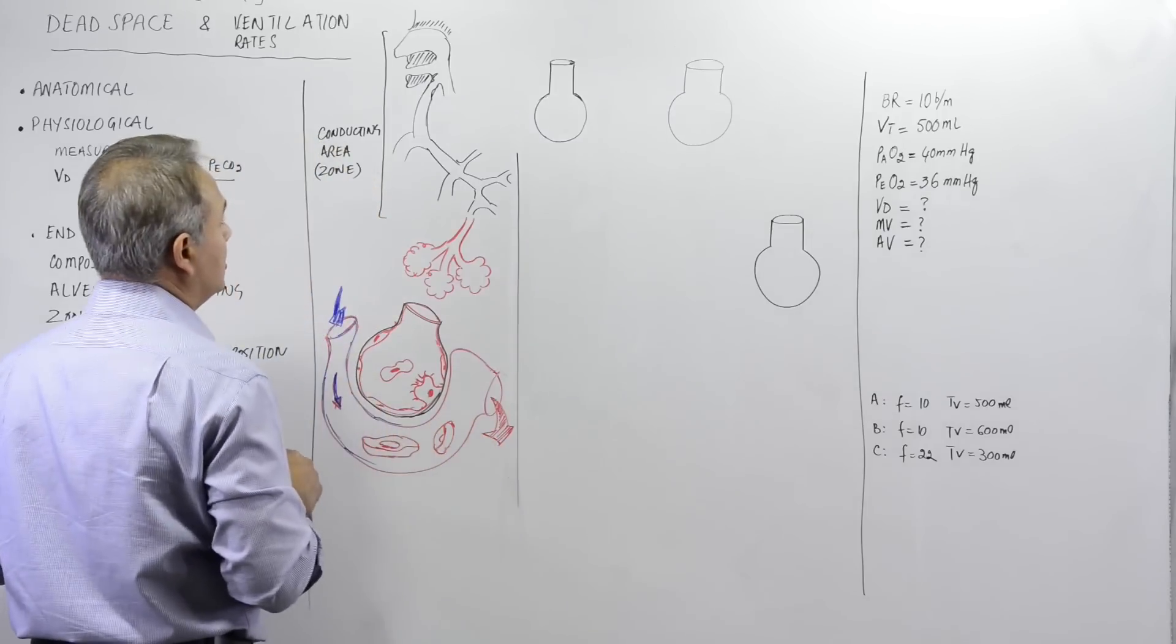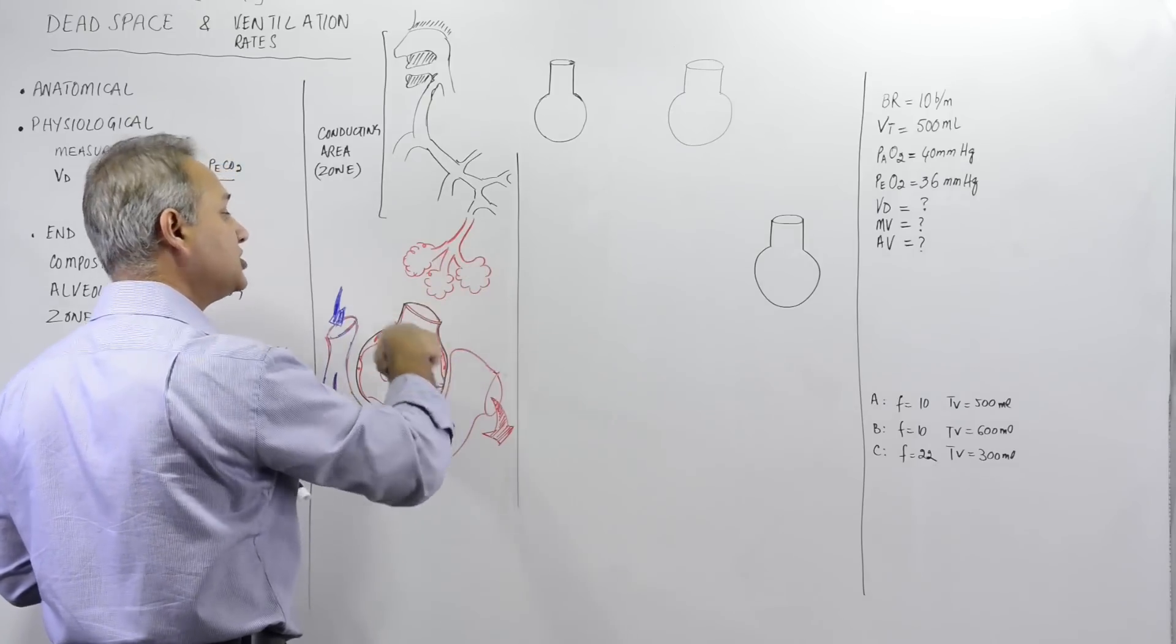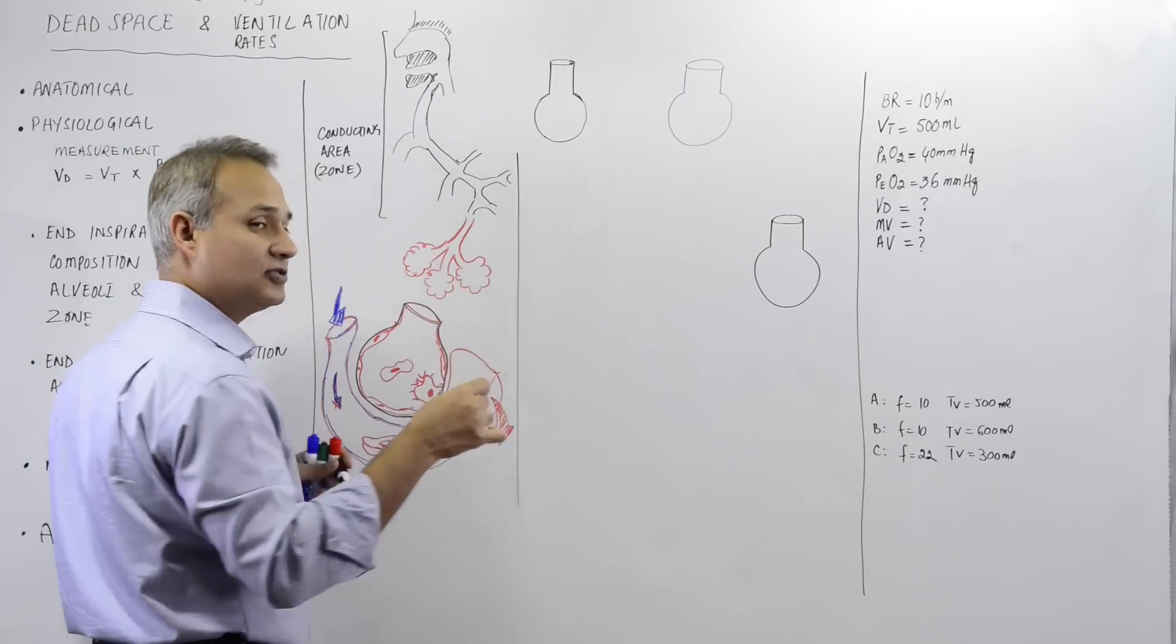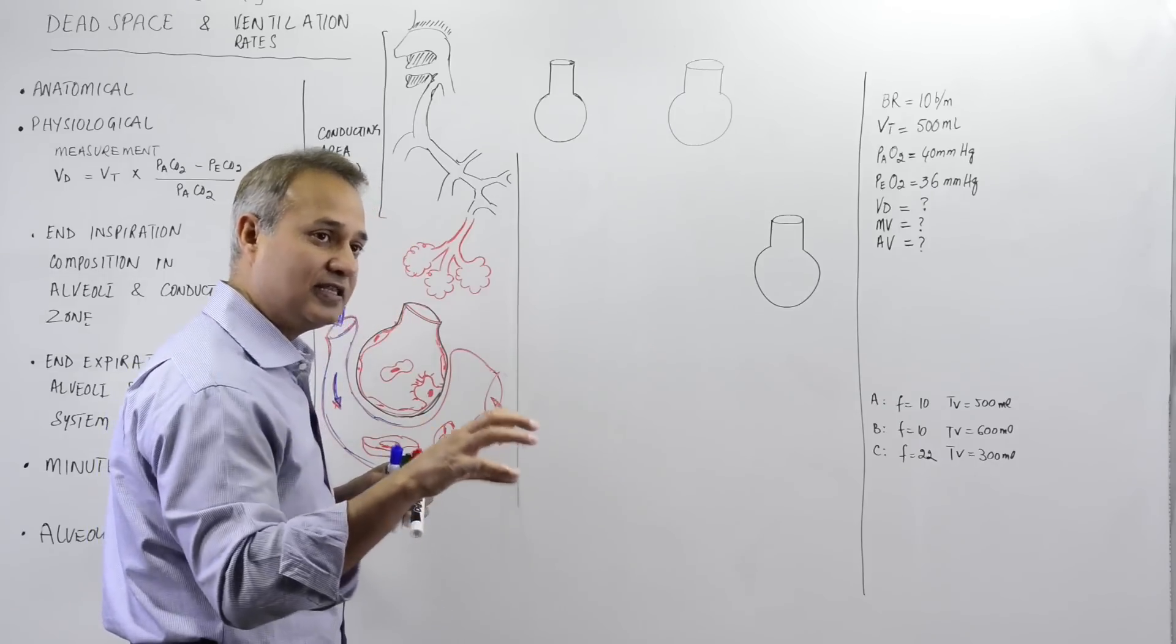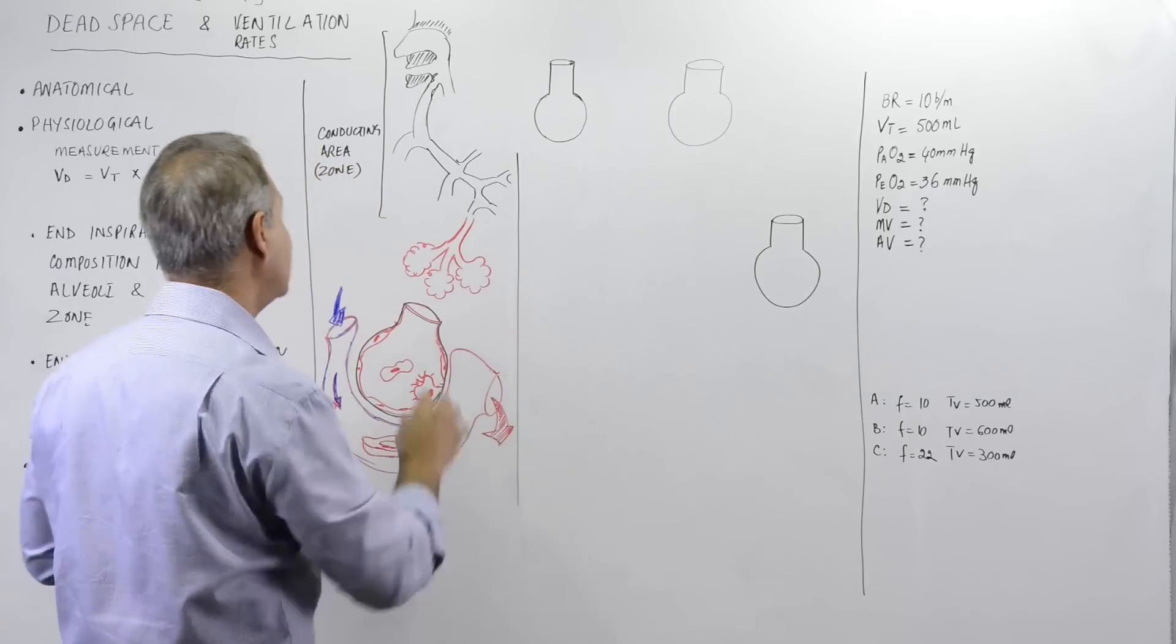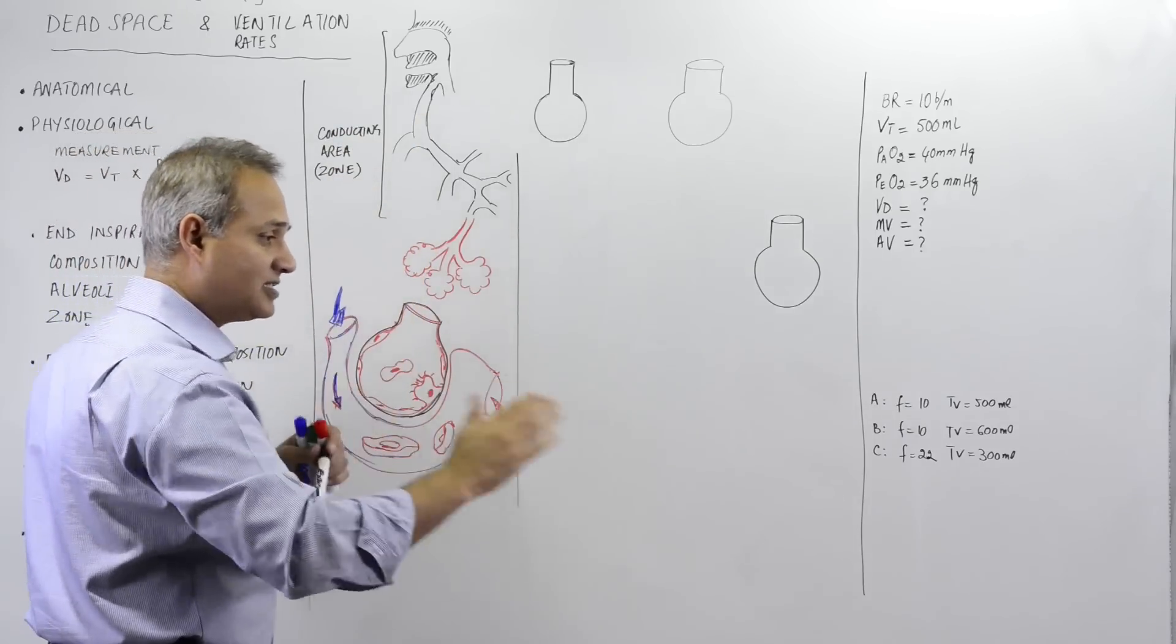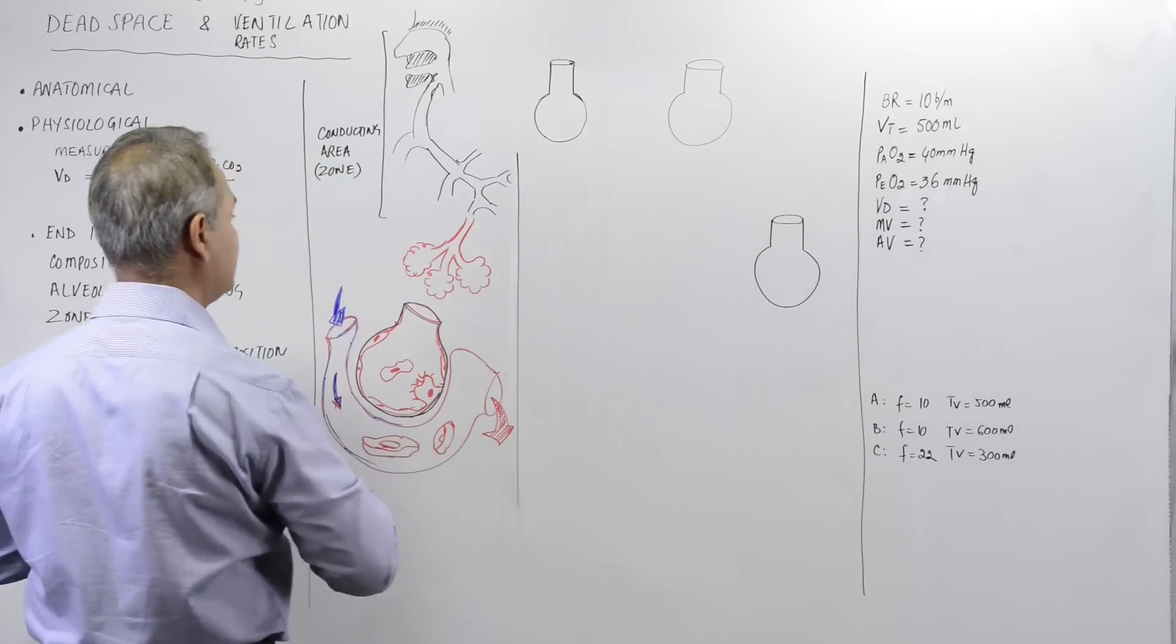Also, we will see that in areas where the gaseous exchange should occur, sometimes those areas also are not functioning properly and we have to calculate the problem in that area as well. We will do that all together today. So conducting area are the areas where the gas exchange is not happening, just conduction of the gases is happening.